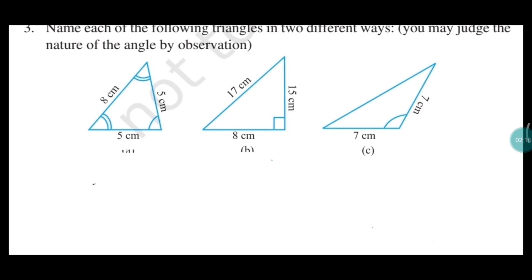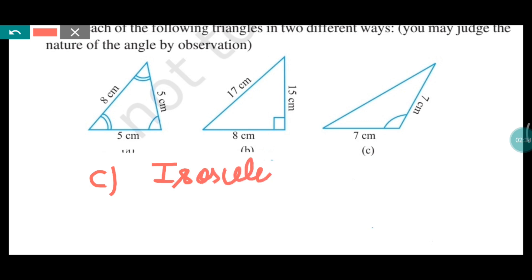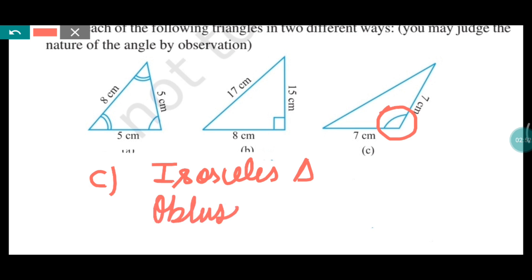Now this is part C. Here you can see two sides are given, both are 7cm. If two sides are equal, it is an isosceles triangle. And you can see one angle is more than 90 degrees — that is an obtuse angle. So which triangle has one obtuse angle? It is an obtuse angled triangle. So this triangle can be named as isosceles triangle because of two equal sides, and obtuse angled triangle because of one obtuse angle.